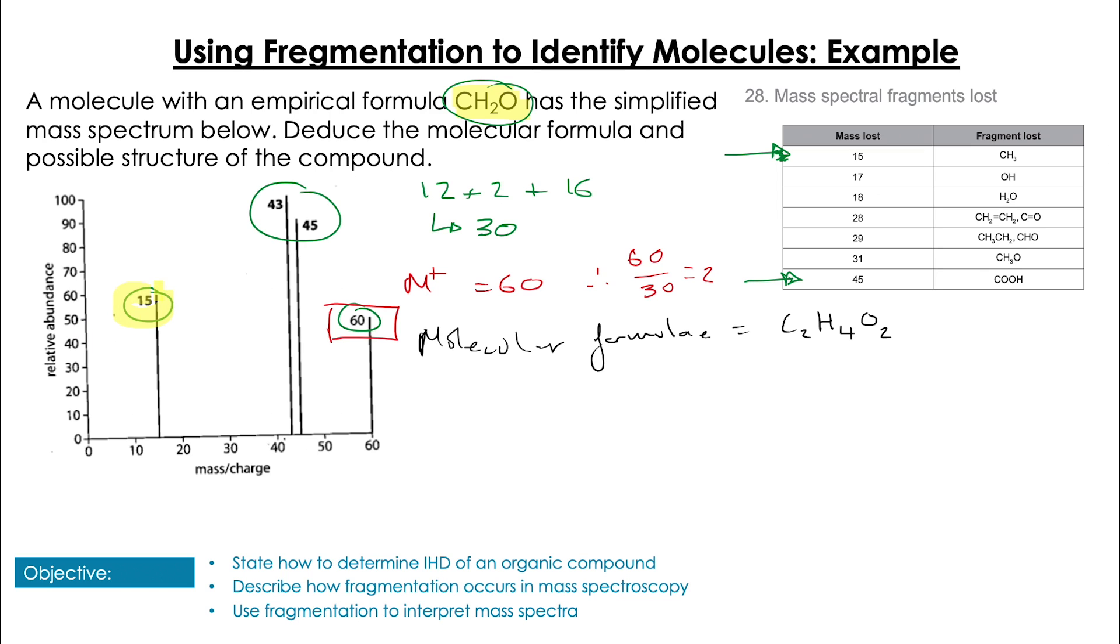So we're able to deduce the molecular formula just from the molecular ion peak and the empirical formula. We know there's a CH₃ group, and we also see at 45 that indicates a carboxylic acid group, so we've got two groups here that are going to be very helpful. And actually, if we combine both of these together and remove our positive charges, we conveniently get the mass of 60, so our compound was actually ethanoic acid.